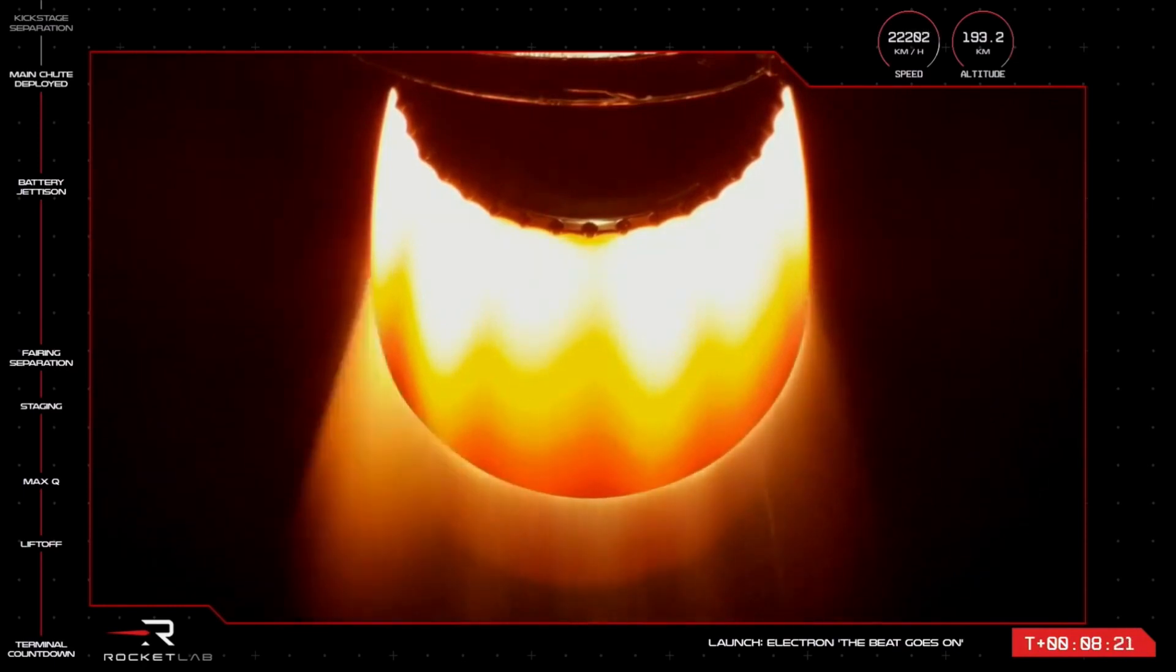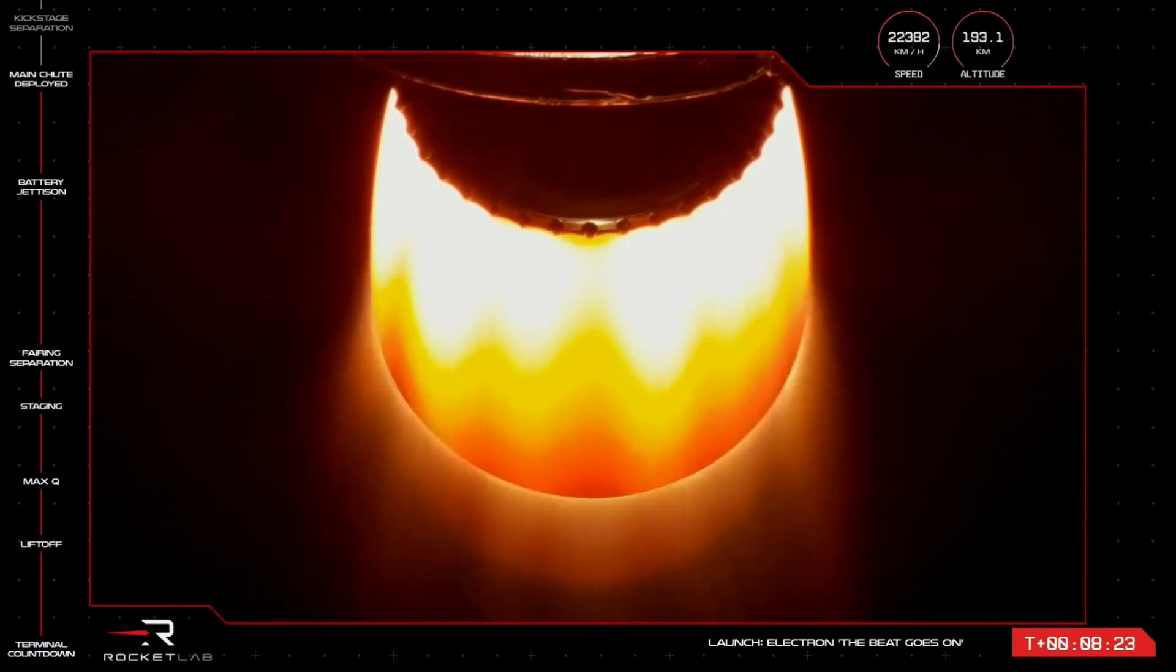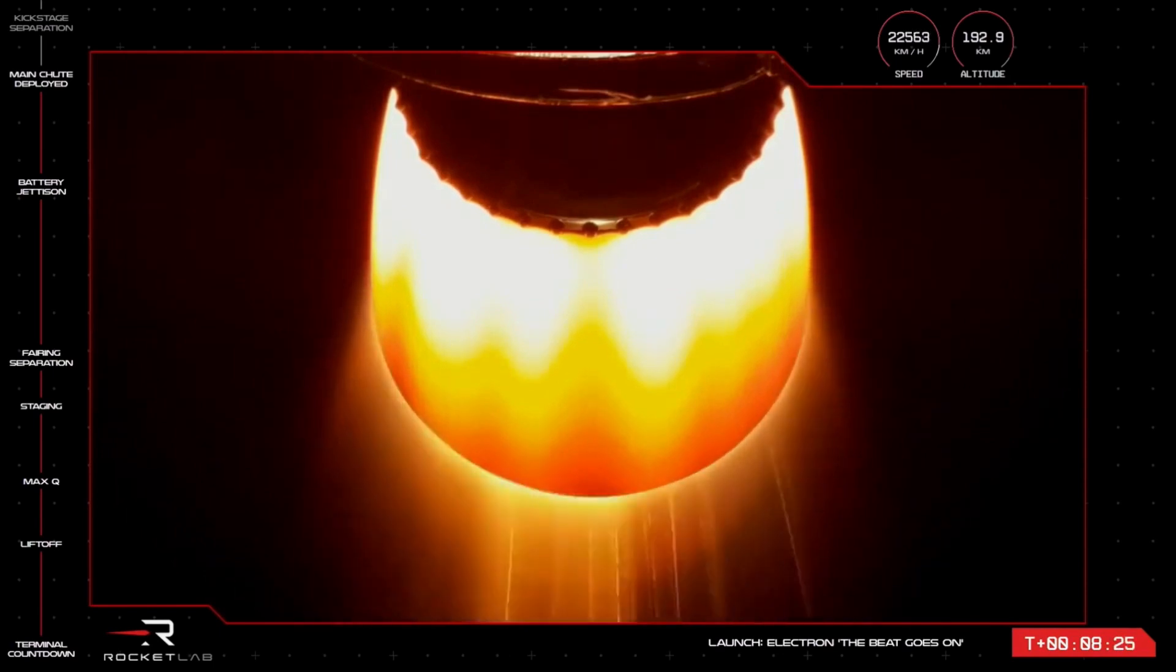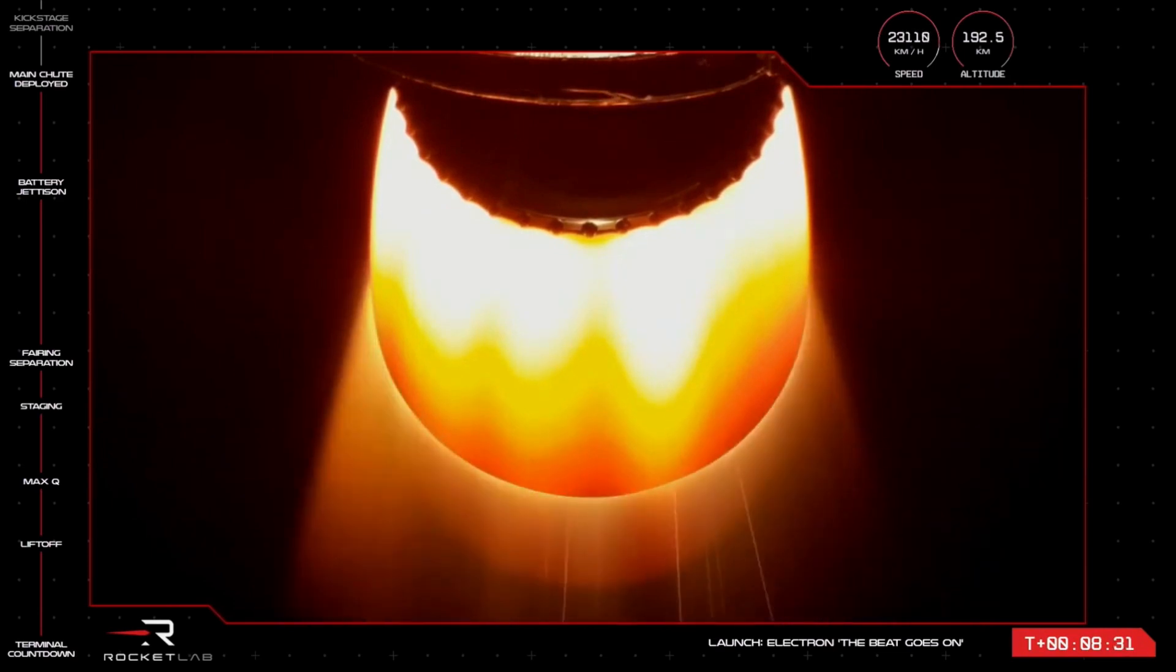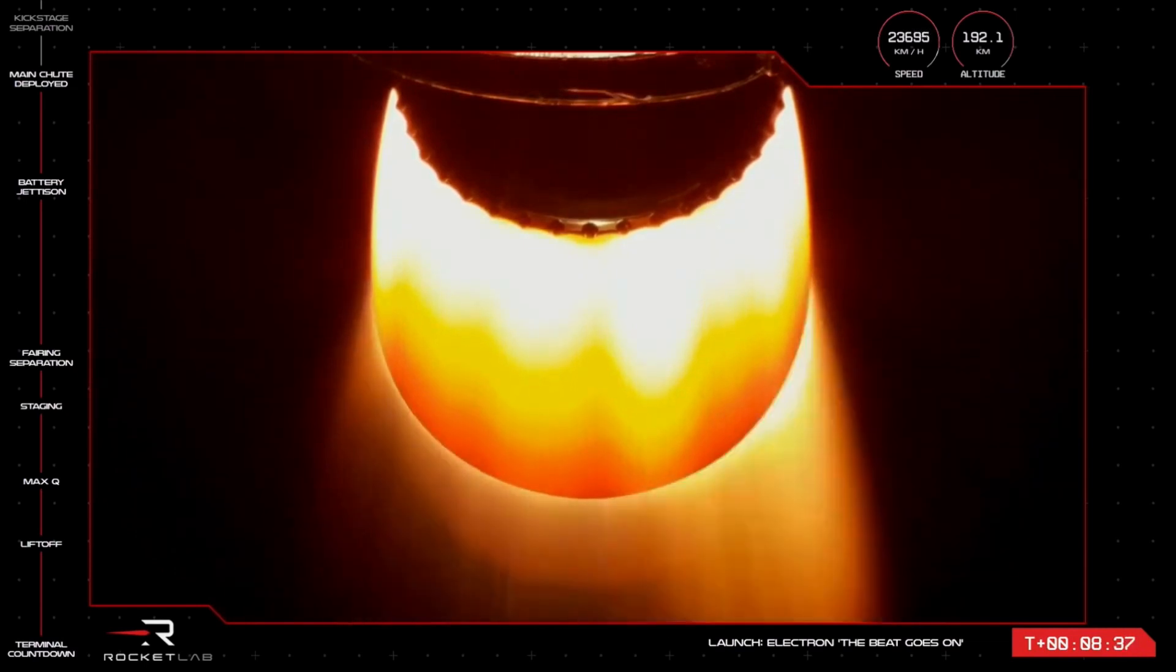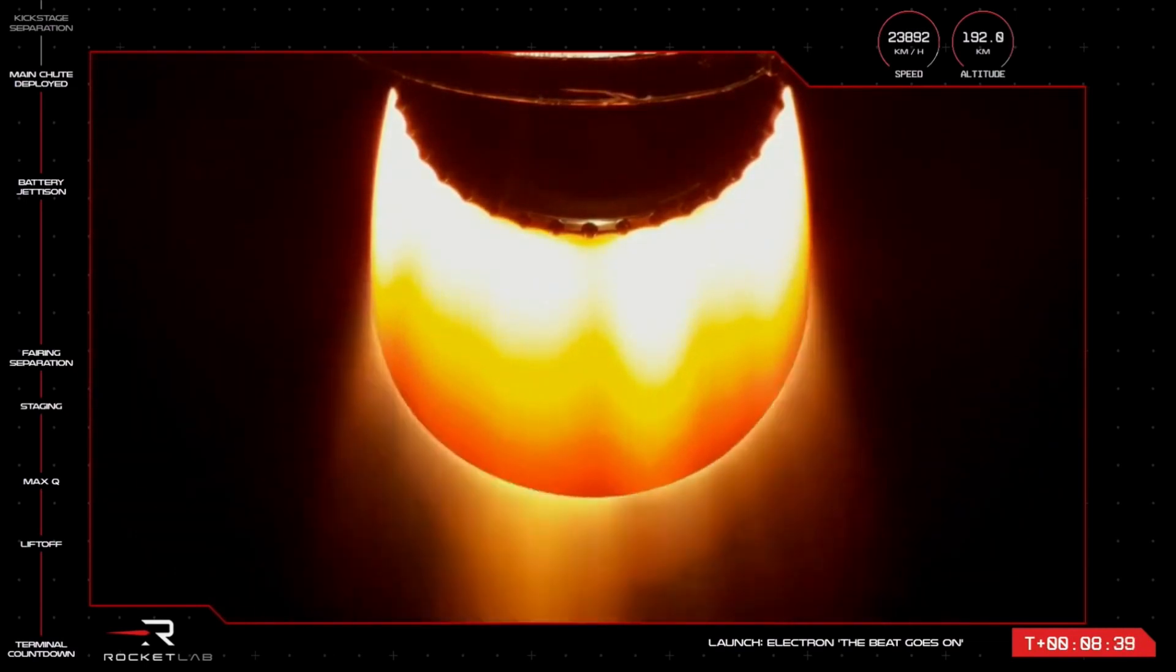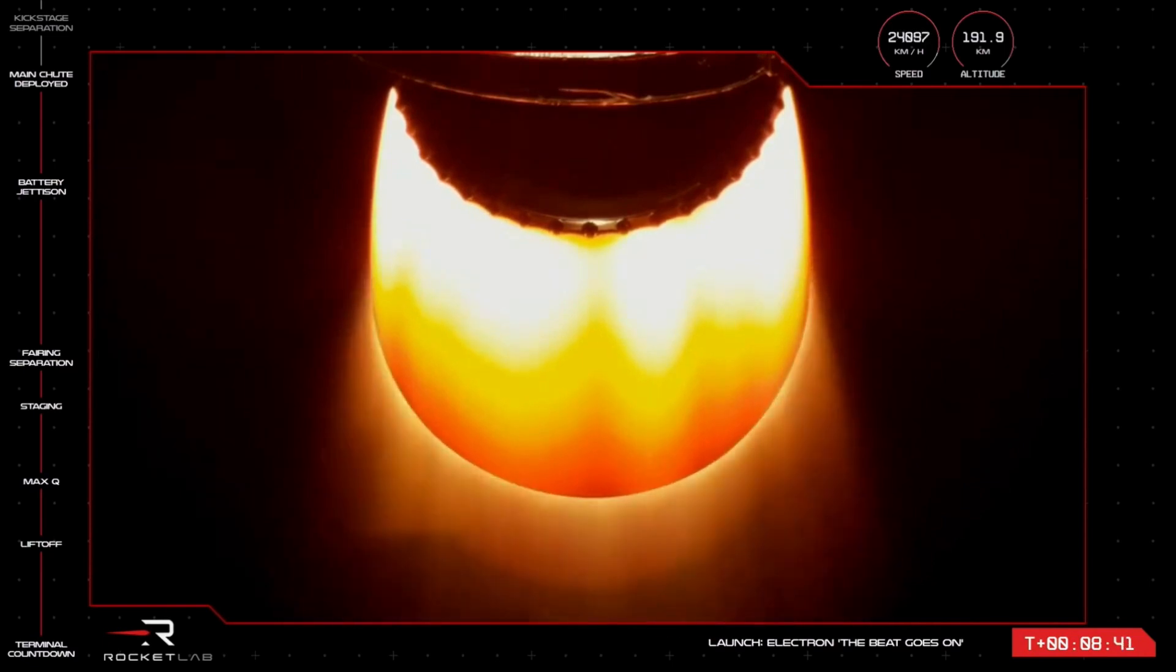Stage 2 performance holding nominal. Main parachute deployed on recovery. We have just heard from Mission Control there that the main chute was successful. Electron is now powering its way down to 158 metres per second ahead of the stage landing in the ocean.